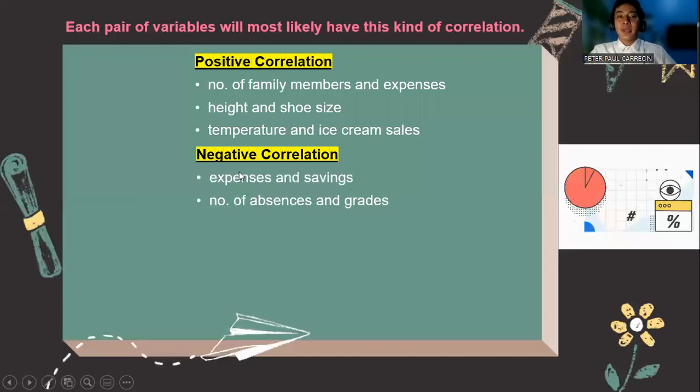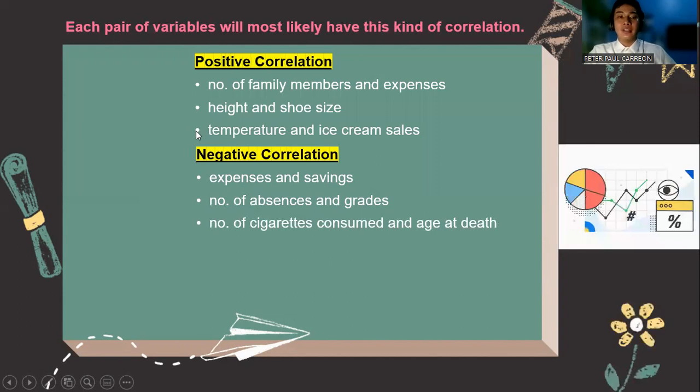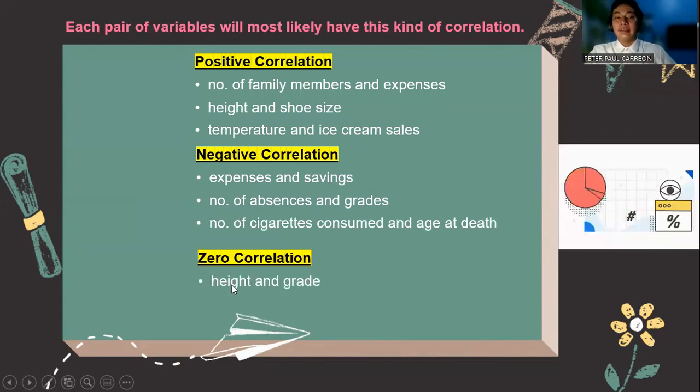Negative correlation. Expenses and savings. The more that you spend money, the less you save. And the less you spend money, the more that you save. Number of absences and grades. And number of cigarettes consumed and age at death. We know that these examples are negative correlation. For zero correlation, your height does not affect your grade. Your scores in Filipino and your scores in PE are different.